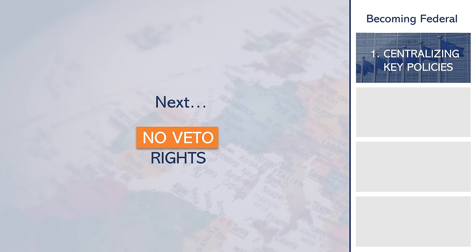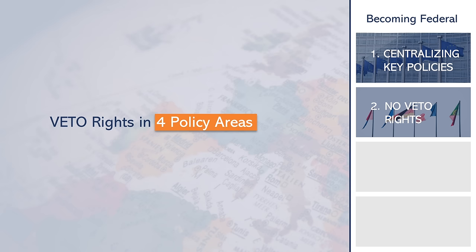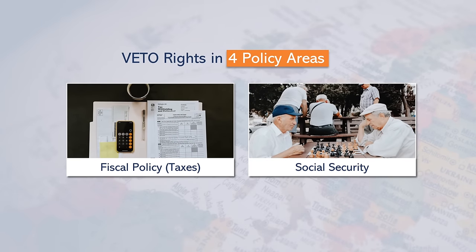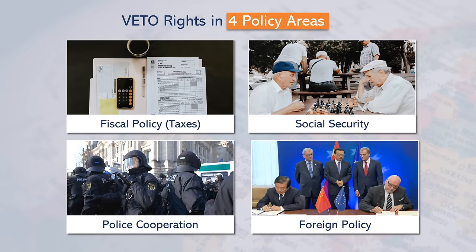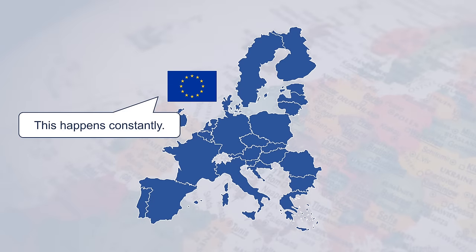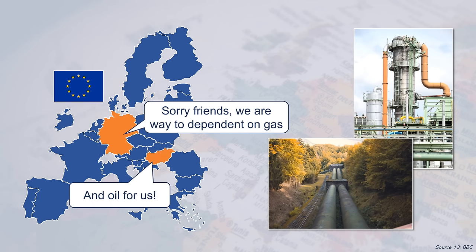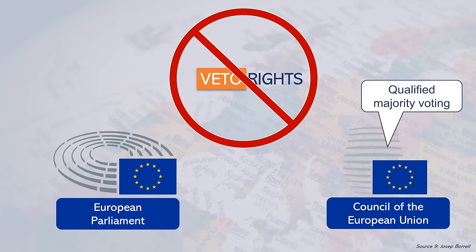Next, there is the issue that member states have veto rights. There are four key policy areas in which the EU cannot legislate unless there is unanimous agreement: fiscal policy including taxes, social security, police cooperation, and foreign policy. This means the entire EU can be held hostage if one country disagrees. For example, Germany blocked a recent proposal to ban Russian gas, and Hungary blocked a proposal to ban Russian oil via pipelines. Instead of veto rights, the European Parliament and the Council of the European Union should vote on such proposals.